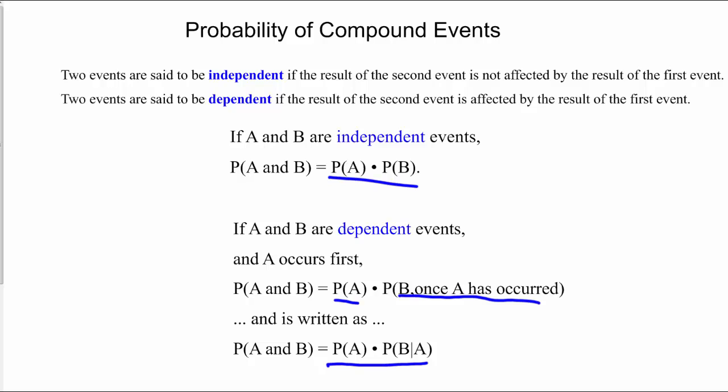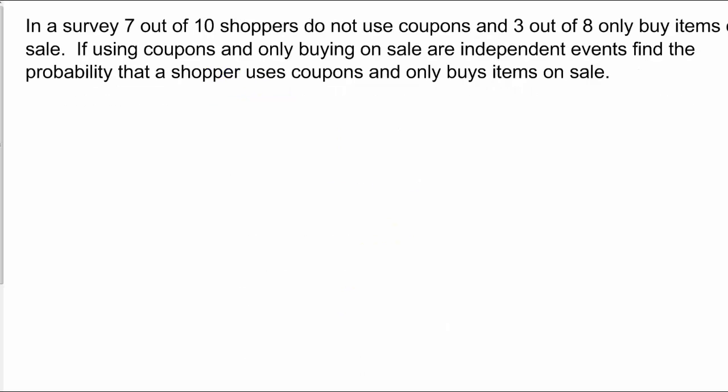Let's look at an example. In a survey, seven out of ten shoppers do not use coupons and three out of eight only buy items on sale. If using coupons and only buying on sale are independent events, we want to find the probability that a shopper uses coupons and only buys items on sale. We determine our two events and look for their specific probabilities, then multiply them together.